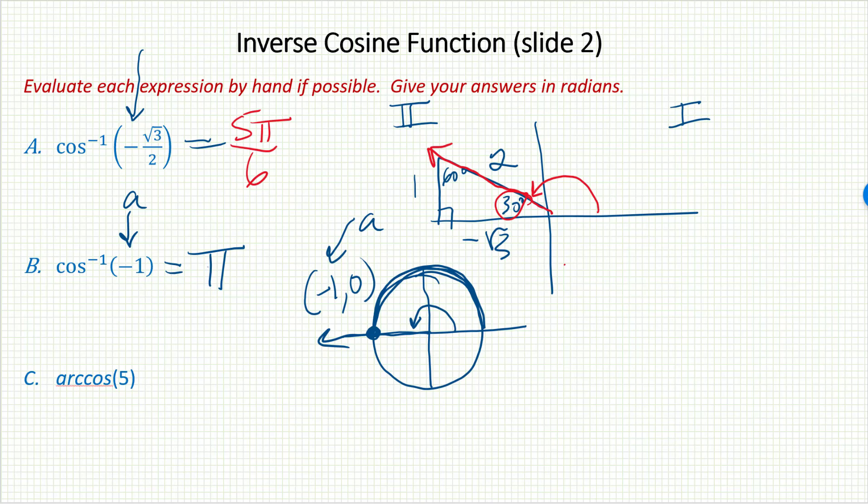Lastly, how about arc cosine of 5? What happens if I stick 5 into the inverse cosine function? Well, hopefully you see right away, I can't do that. The highest ratio I can stick in is 1. And so this one would be undefined. Thanks for watching.